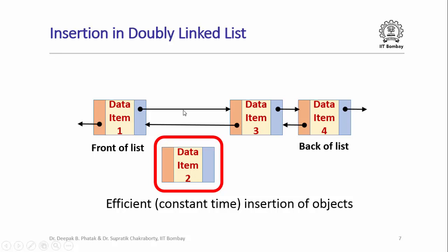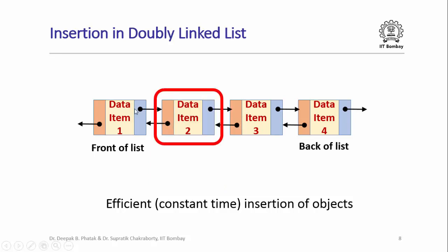Similarly, insertion in a doubly linked list can also be done very efficiently — in fact it can be done in constant time. Suppose I wanted to insert a data item at a certain position: all I need to do is reassign the forward and backward links so that the forward link from data item 1 points to data item 2, the forward link from data item 2 points to data item 3, the backward link of data item 3 points to data item 2, and the backward link from data item 2 points to data item 1.